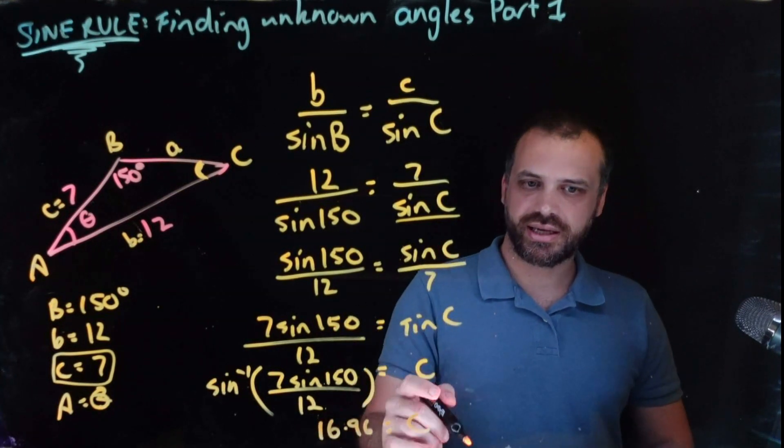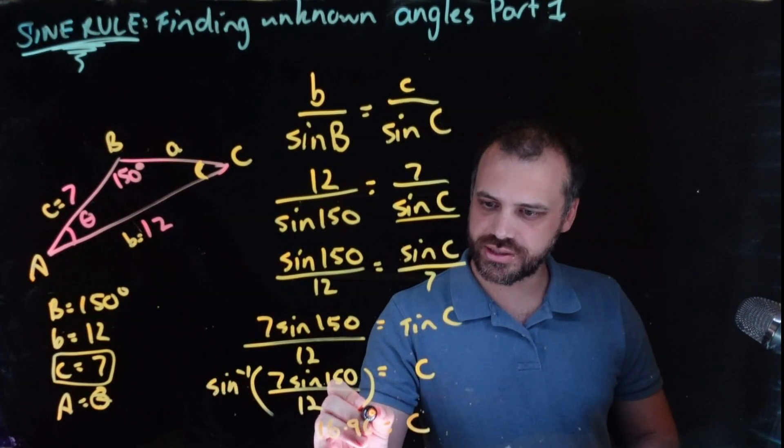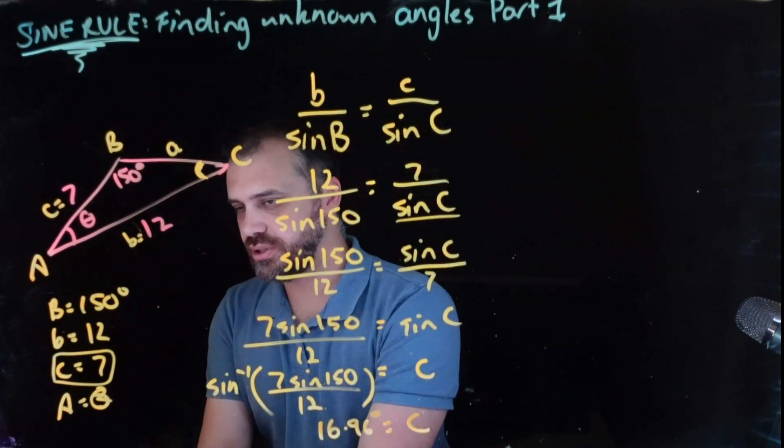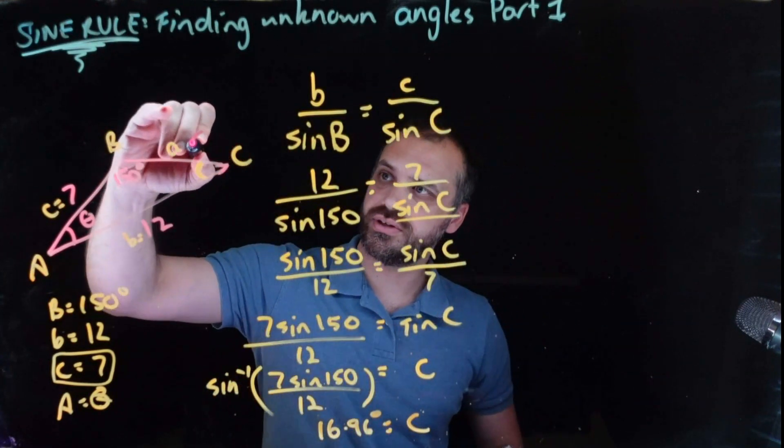Alright, so that means that C is equal to 16.96 degrees, right? This is an angle. So what did I just find? Well, I just found this angle.